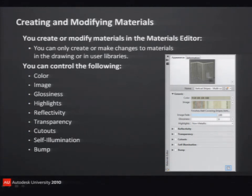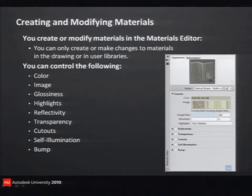Most of the materials you'll find in AutoCAD are created by simply taking a photograph of the actual material. But if I take a photograph of brick, it's going to look like a photograph of brick. If I then take that same photograph and convert it to a grayscale, I can save that grayscale image as a separate JPEG, TIFF, or PNG file and use that as a bump map. That's how AutoCAD gets the effect of the brick actually having a rough surface and the mortar joints being slightly recessed from the face of the brick.